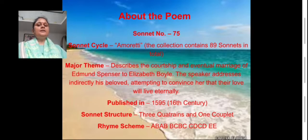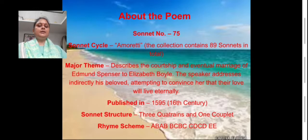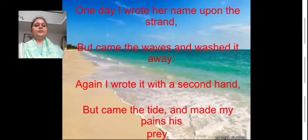If we talk about the structure of the sonnet, the whole sonnet has been divided into three quatrains and one couplet. The rhyme scheme of the sonnet is A-B-A-B, B-C-B-C, C-D-C-D-E-E. Now let's have the text of the poem.